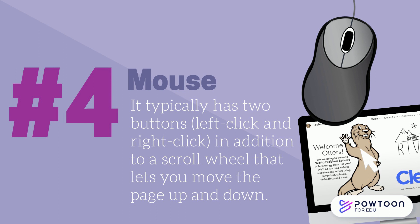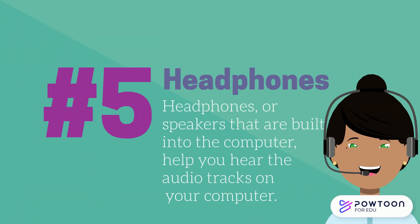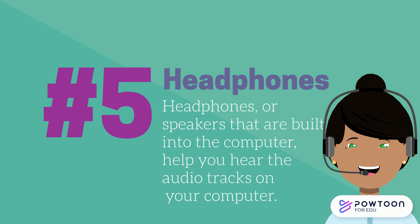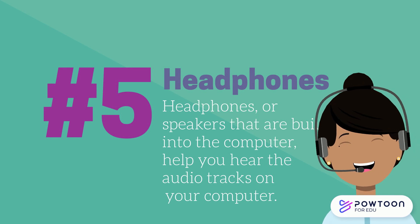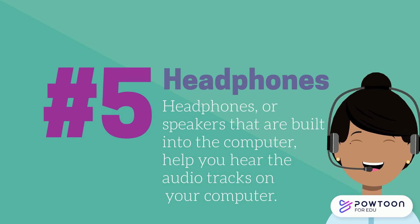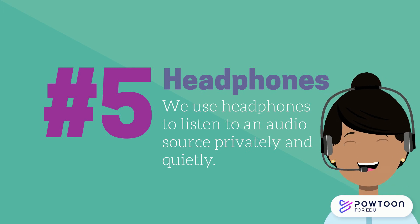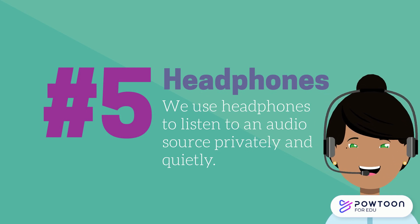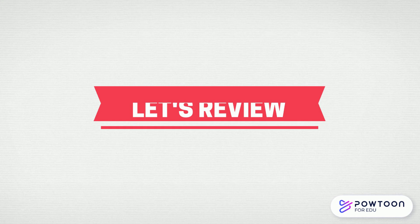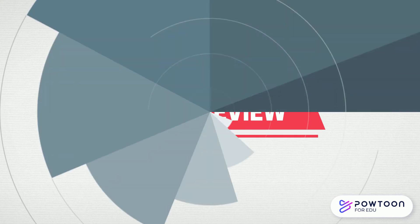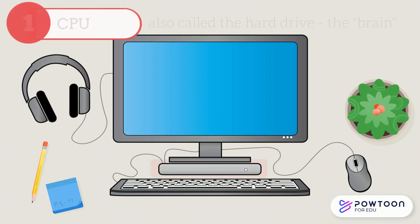The mouse has two buttons — left click and right click — in addition to a scroll wheel that lets you move the page up and down. Number five is headphones. Headphones, or speakers that are built into the computer, help you hear the audio tracks on your computer.